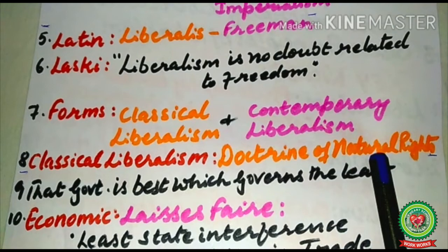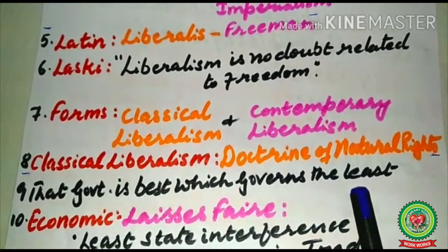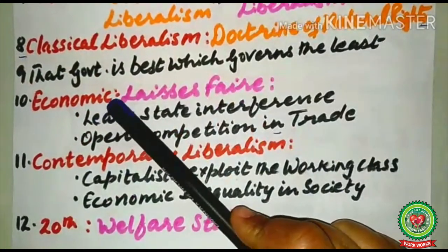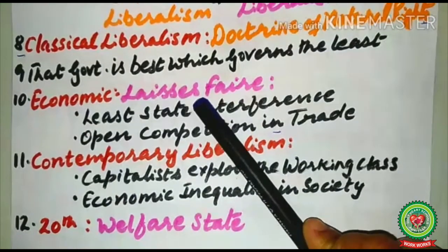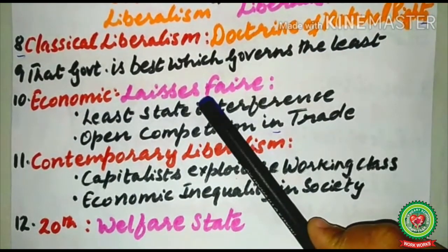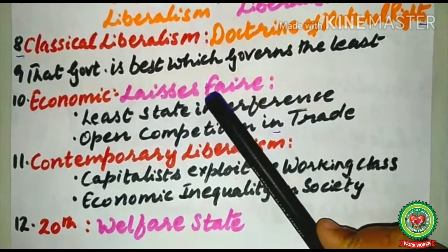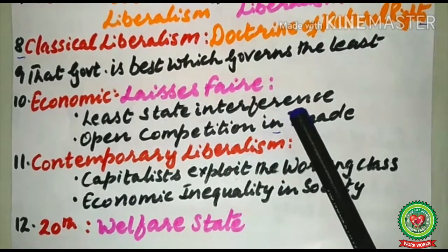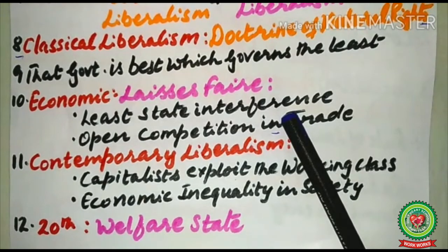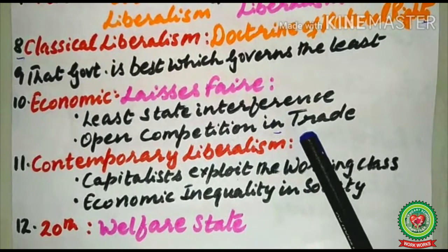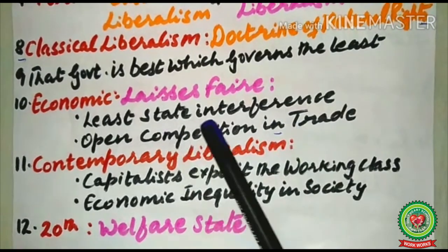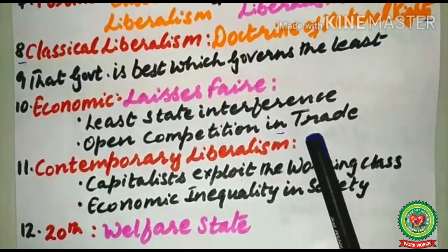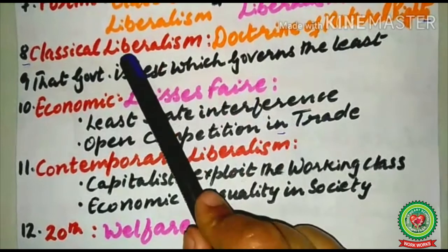Classical liberalism even advocated that the government is best which governs the least. In the economic sphere, it supported the idea of laissez-faire — meaning the least amount of state interference in the economic life of the people. It also supported open competition in trade. So the two key things in classical liberalism are: least state interference, and open competition in trade.